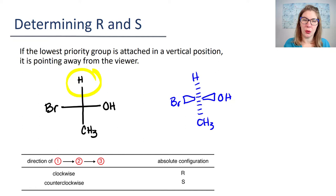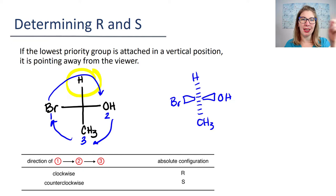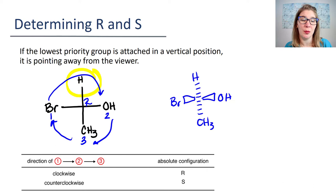When it's pointing away from you, you're going to go through the process of number one priority to number two to number three and see which direction you're moving. Let's assign some priorities: bromine is priority one, oxygen is priority two, carbon is priority three. If we go from one to two to three and back to one, see how we're going in that clockwise direction? That means this configuration is going to be R. If we were going counterclockwise, then the configuration would be S.